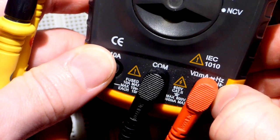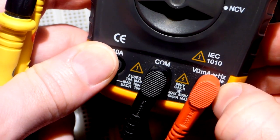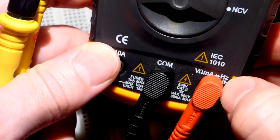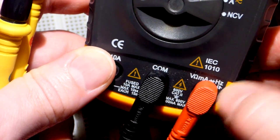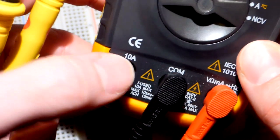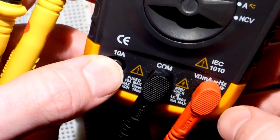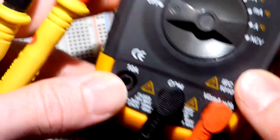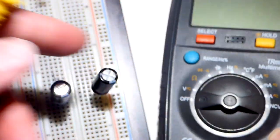First off, for this particular meter we don't have to do anything when it comes to moving the red probe. We have it where it almost always is. This meter measures everything but high current with the red probe right there, so odds are you'll be leaving it where it is with this particular meter.